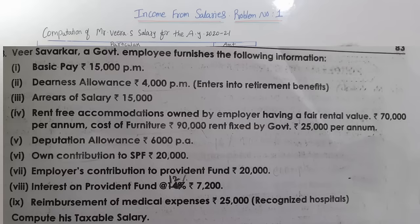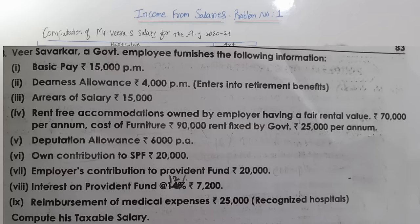Arrears of salaries come under the salaries column. Rent-free accommodation owned by the employer has a fair rental value of ₹70,000 per annum; cost of furniture is ₹90,000; rent fixed by the government is ₹25,000. Fair rental value ₹70,000 versus government-fixed ₹25,000 — whichever is less we consider, so ₹25,000 is taken. The furniture cost of ₹90,000 has 10% taxable, which we discussed in the previous class.